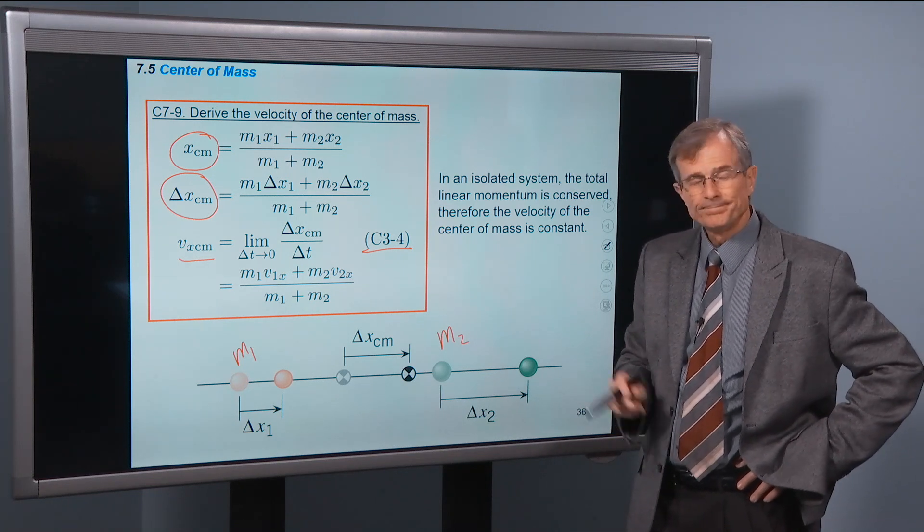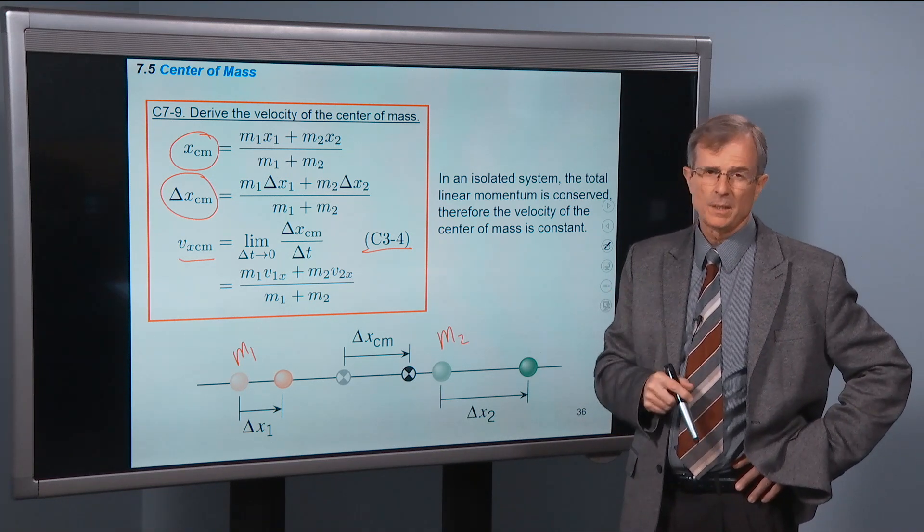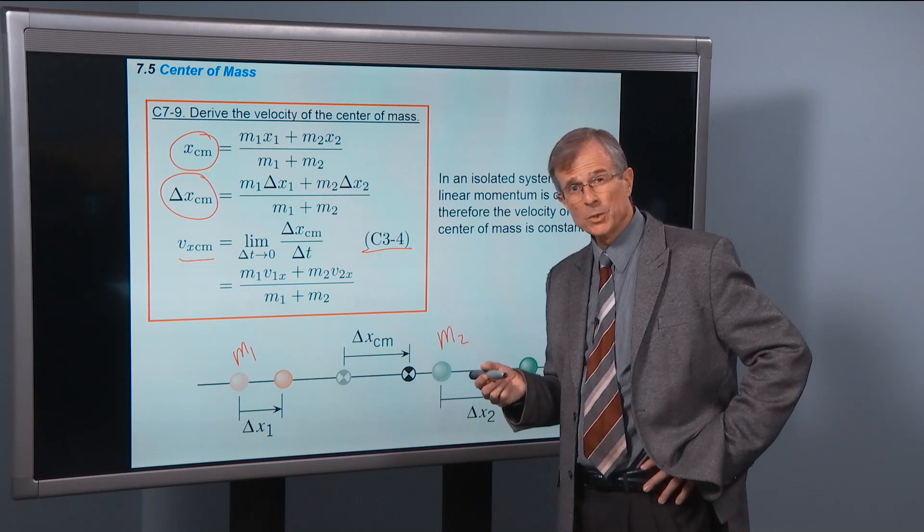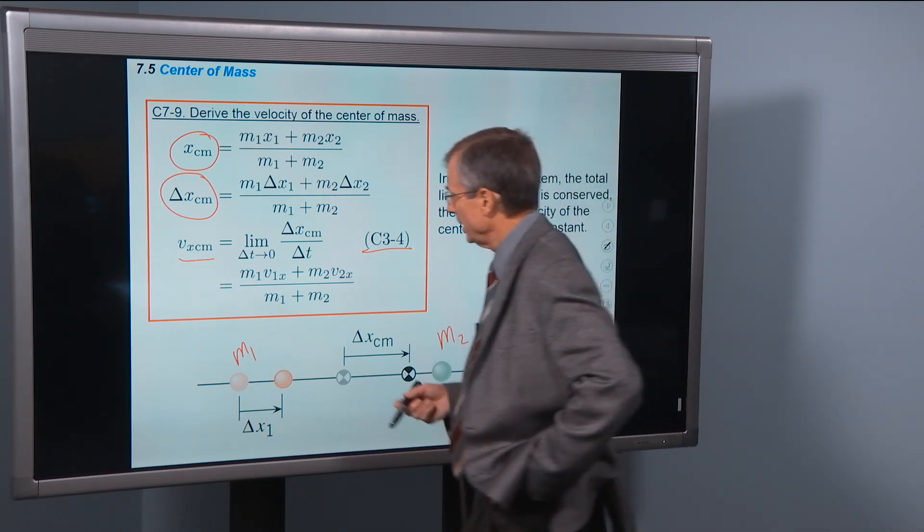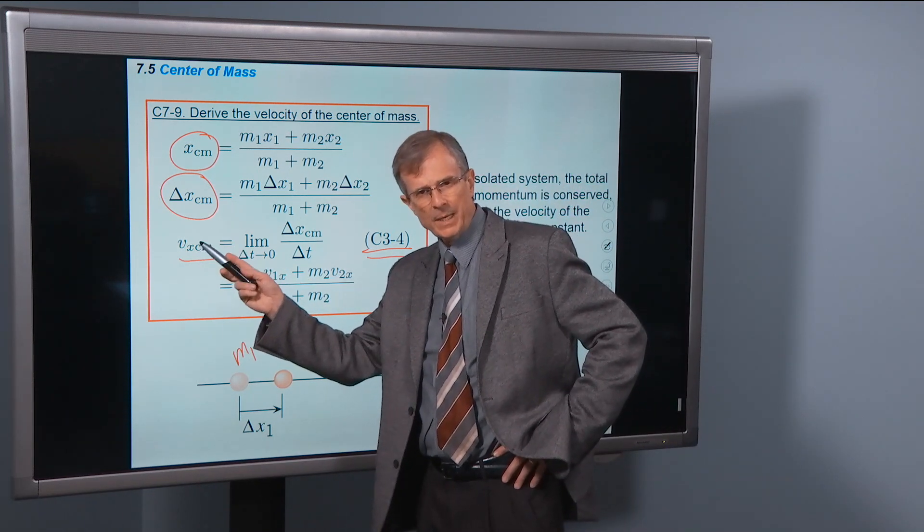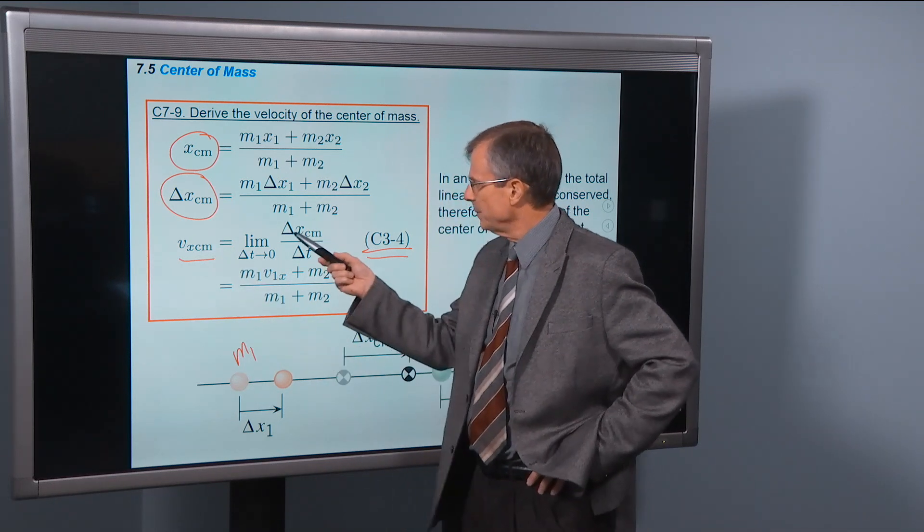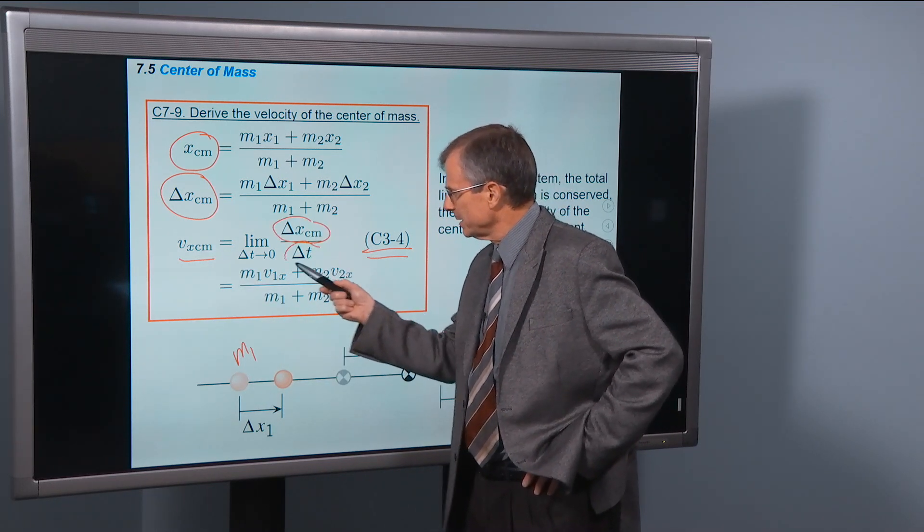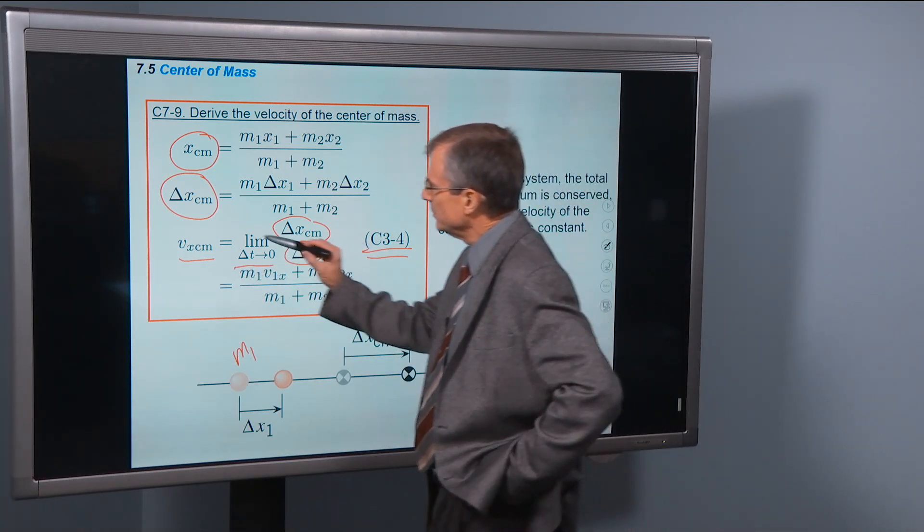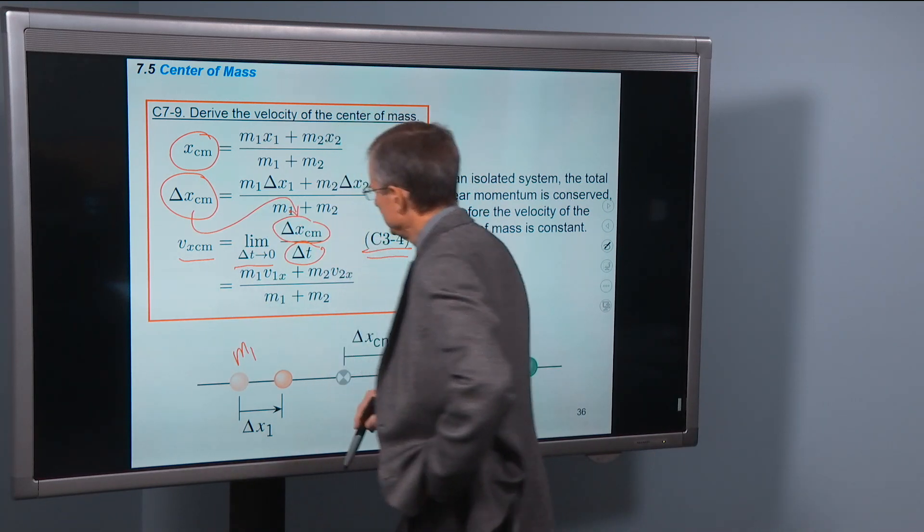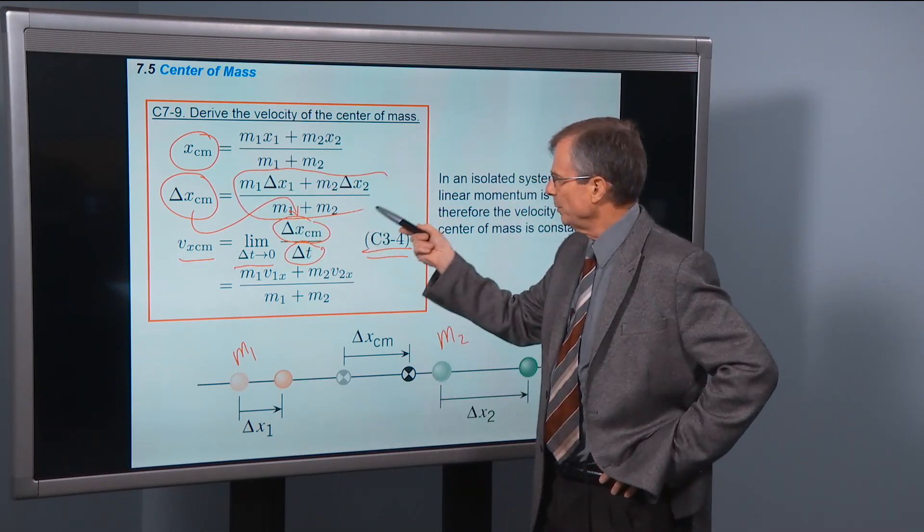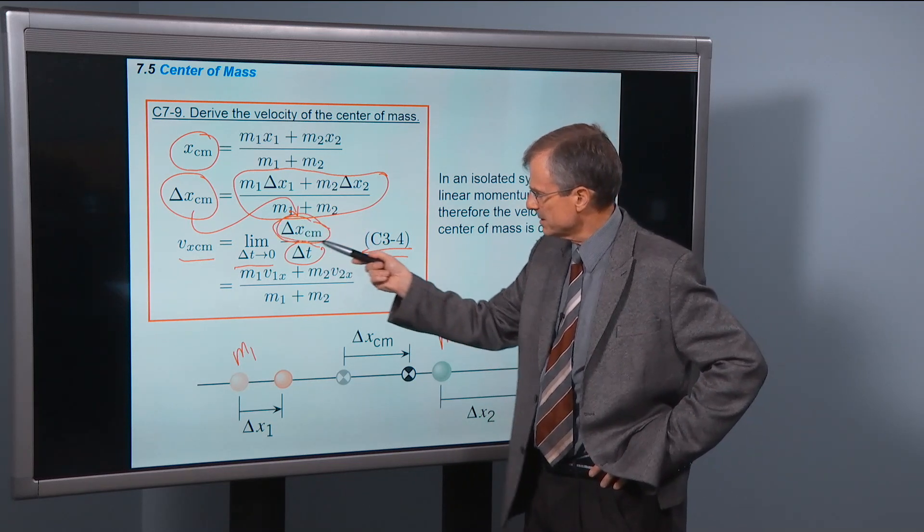But notice now that we can find the position of the center of mass as per the definition of the instantaneous velocity of an object, and this object is the center of mass of the two. So by concept 3-4, the instantaneous velocity is the displacement divided by the elapsed time in the limit that delta t goes to zero. If we substitute this result into here, then all we have to do is take this and divide everything through by delta t.